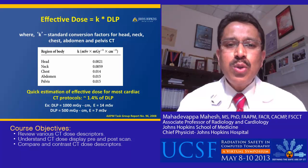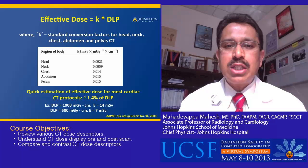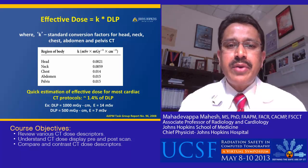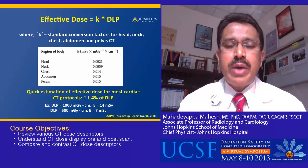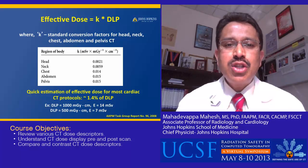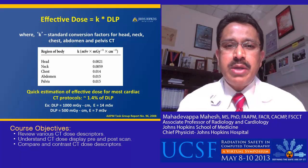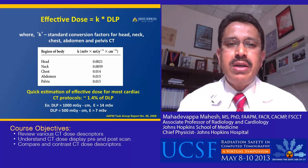There are also well-established conversion factors published by the AAPM Task Group Report 96, which can readily be used with the DLP to arrive at estimated effective dose values. These conversion factors are provided for head, neck, chest, abdomen, and pelvis. For chest, abdomen, and pelvis, a quick estimation is that approximately 1.5% of the DLP provides a rough estimate of the effective dose value.